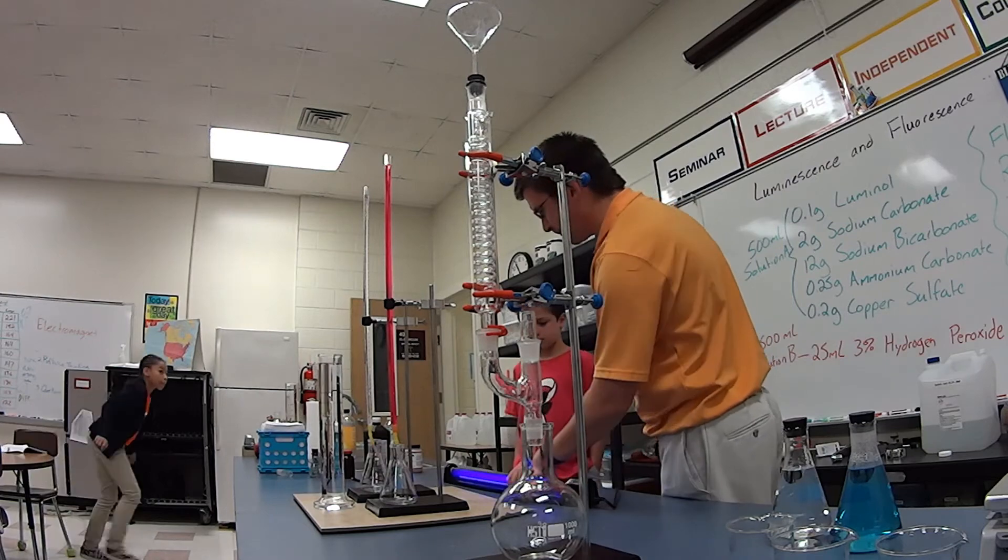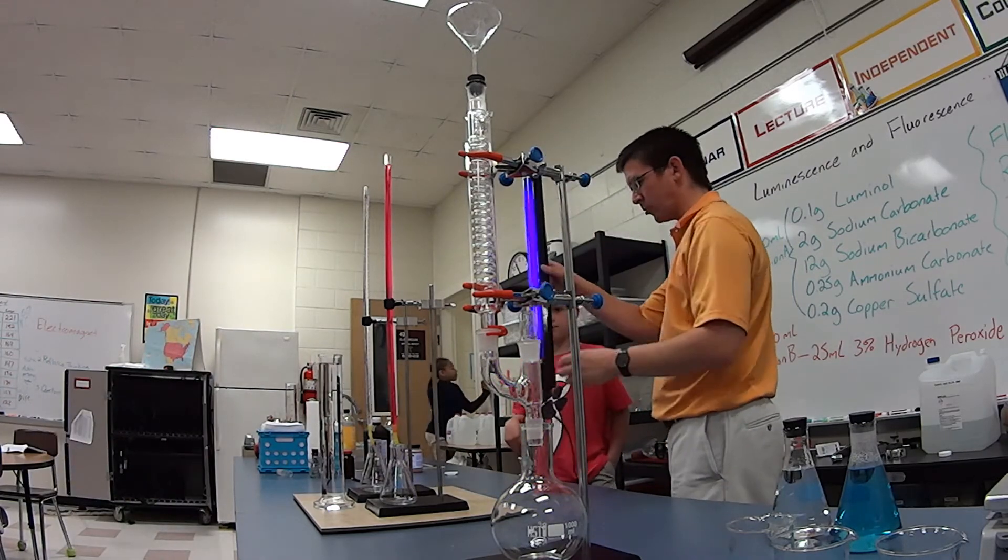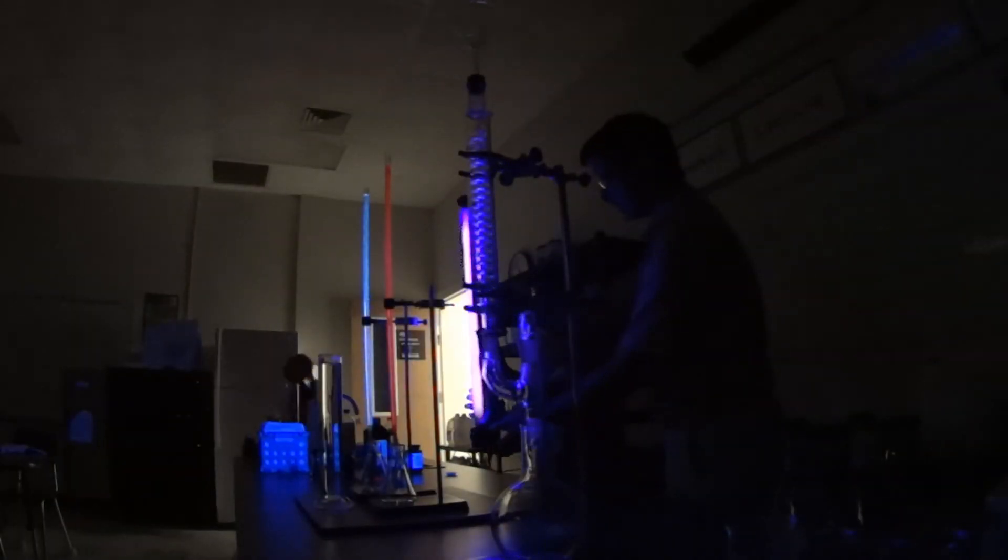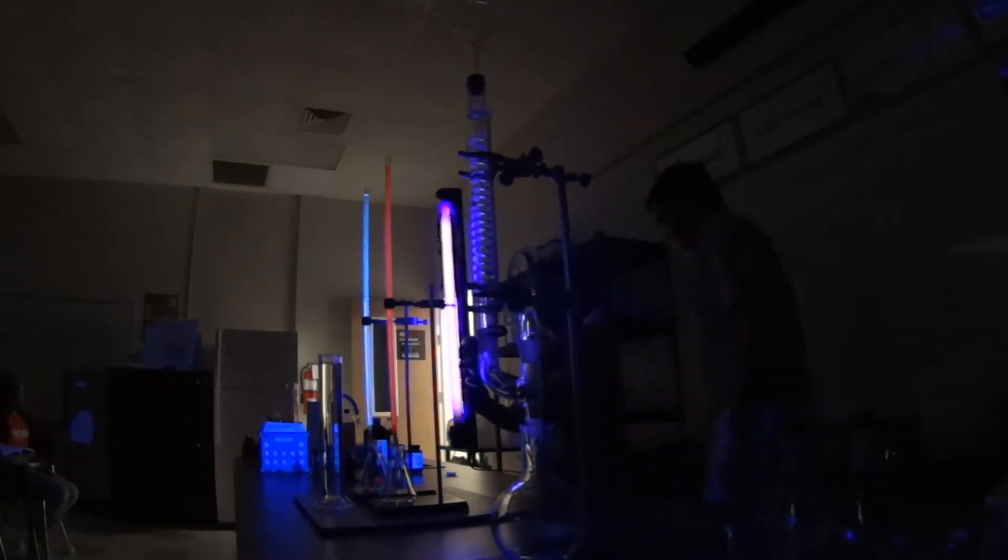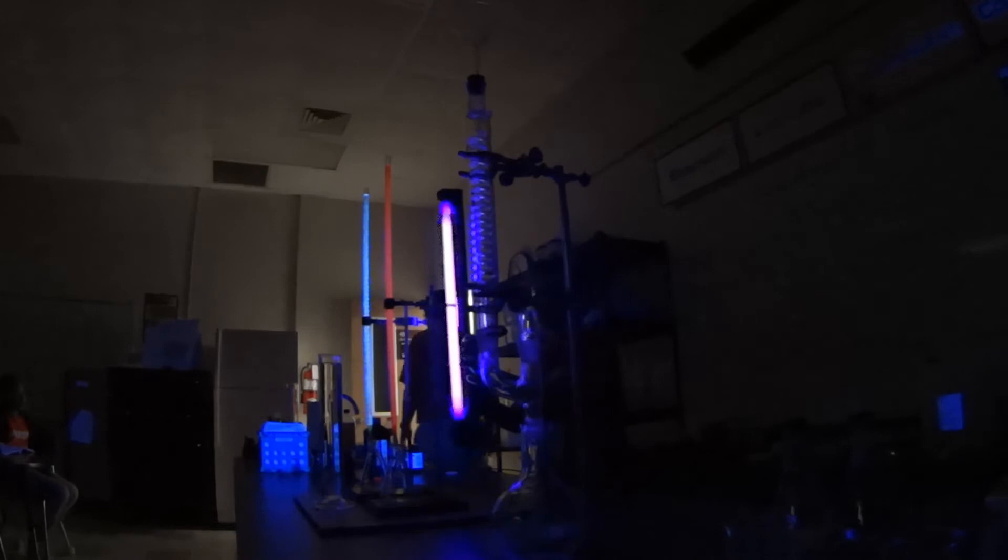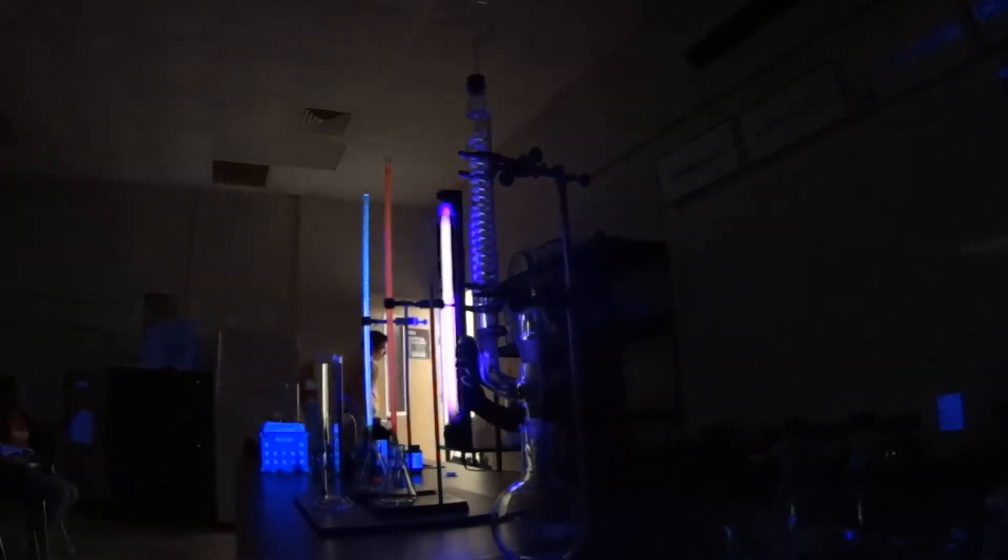Let's look at what it means to have a fluorescent chemical. If we can cut the lights off, and Jacob, I'm going to have you hold our black light just right here. The closer you can get it, the better. So what are these chemicals doing under the black light? They're glowing.